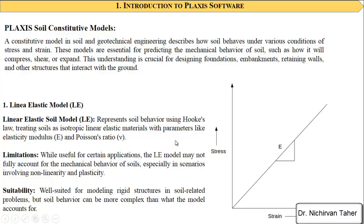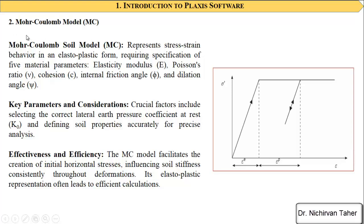Another constitutive model is the Mohr-Coulomb model. This model represents stress-strain behavior in an elasto-plastic form, as shown in this figure. It contains two parts: an elastic region, and after that it becomes plastic. It requires five parameters: modulus of elasticity, Poisson's ratio, cohesion, internal friction angle, and dilation angle. Another important parameter in this model is K0, the coefficient of at-rest earth pressure, which the software generally calculates automatically based on the other parameters entered.